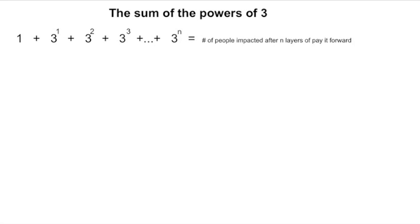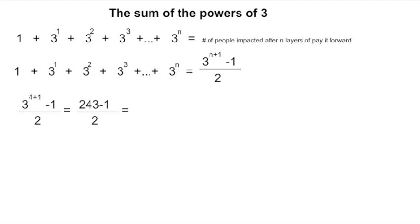So if we add up the powers of three up to three to the n, that'll tell us the number of people impacted after n layers of pay it forward. So the formula is actually three to the n plus one, minus one, divided by two. So if you want to find after four layers, we just plug in four. We get 243 minus one, divided by two.